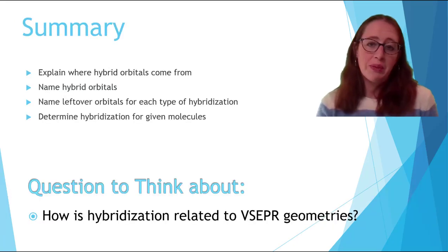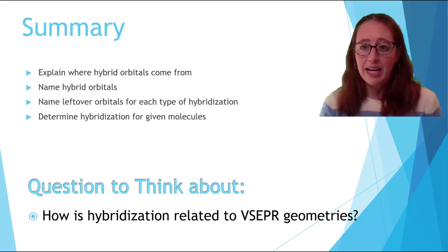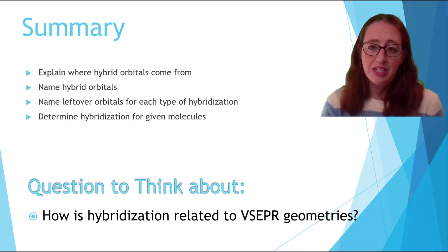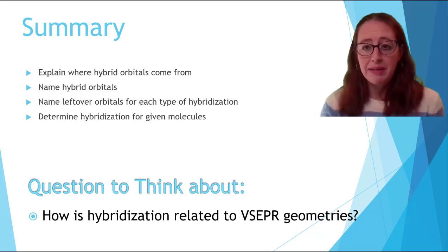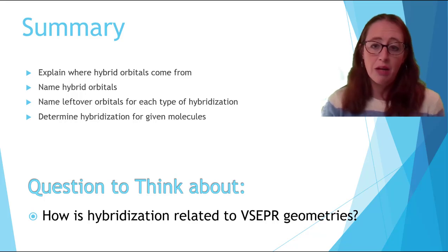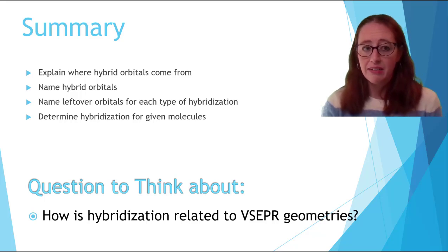In this video, we've covered how hybrid orbitals are made and how their naming comes directly from this. We've talked about how to find hybridization of a central atom, and to know which orbitals are left over from each type of hybridization. We've talked in passing throughout the video about how VSEPR and hybridization is related. Spend some time making sure to think about these connections. Perhaps go back and work on VSEPR geometries now considering how much they match hybridization that you can identify.